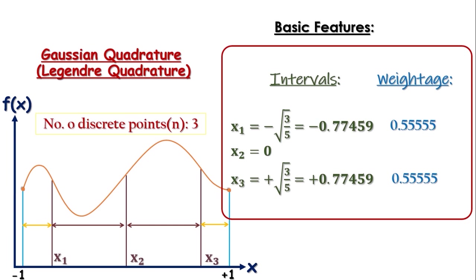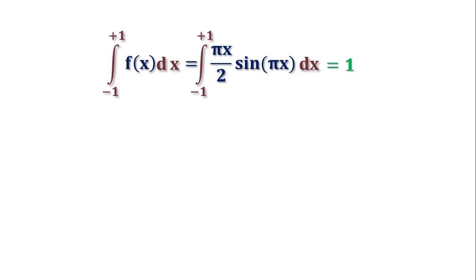Well, enough of this. It's time to look into a practical example. Let our function of x be pi x by 2 sin pi of x. So the exact value of the integration is 1. You know that. Now, let's see how the number of intervals and different approaches affect our calculation.